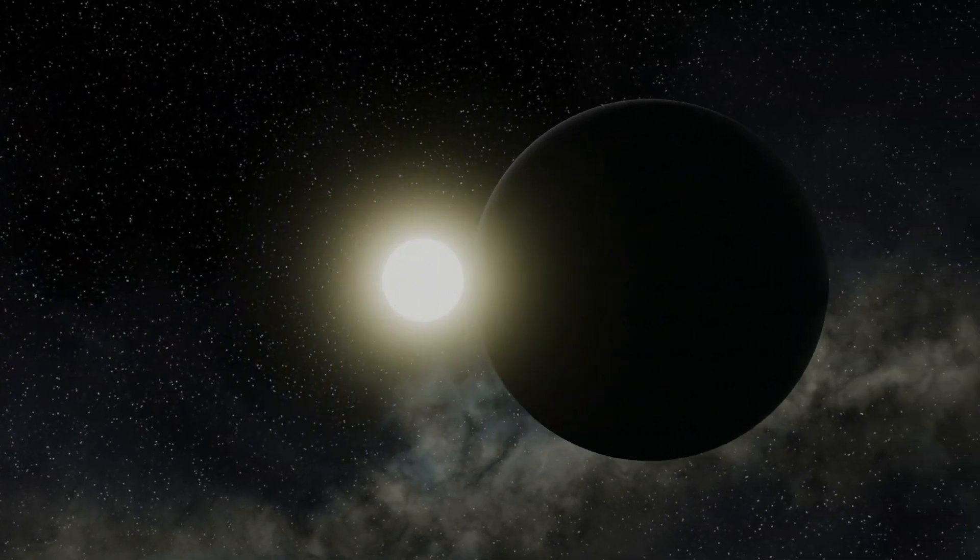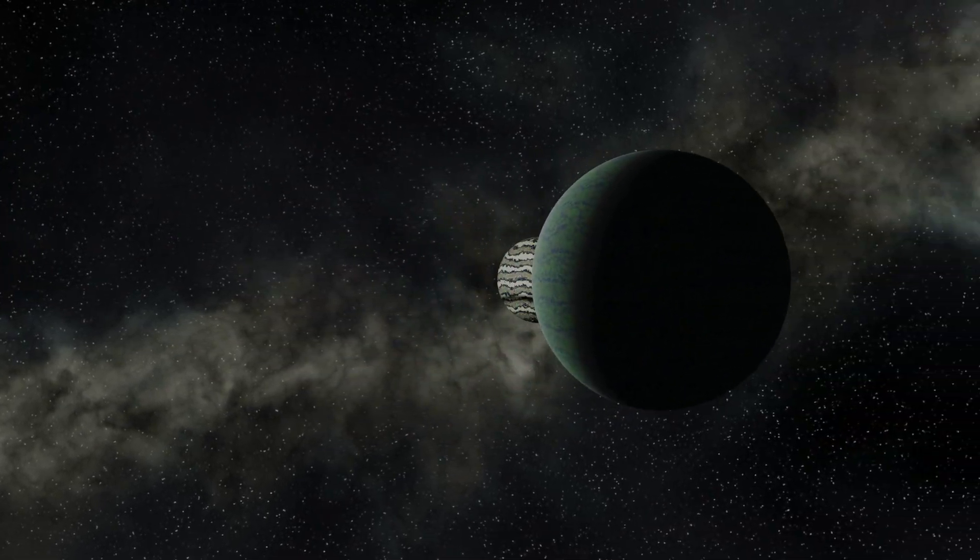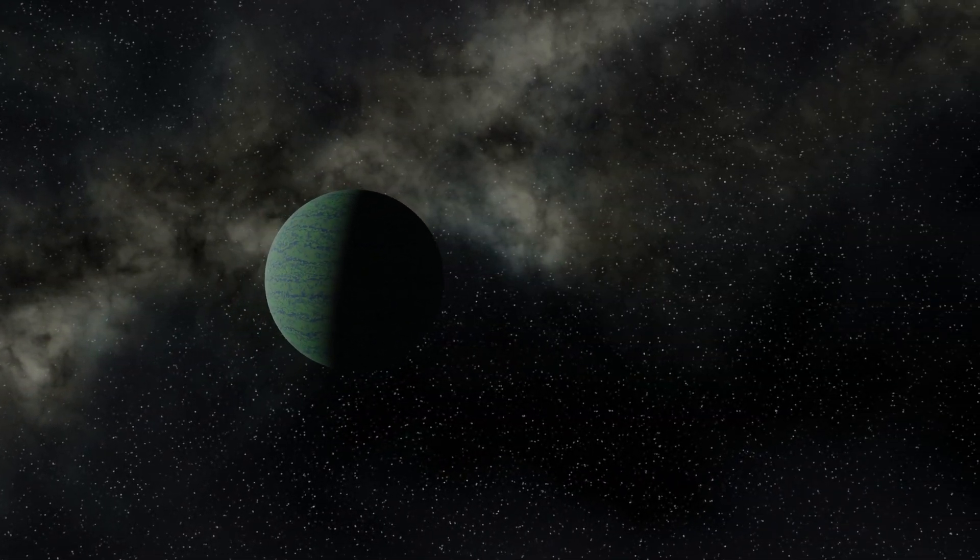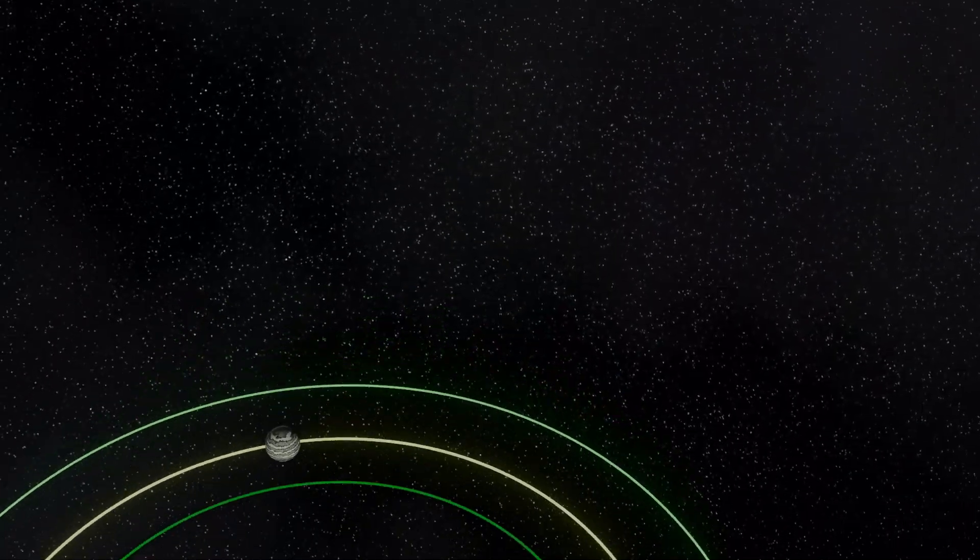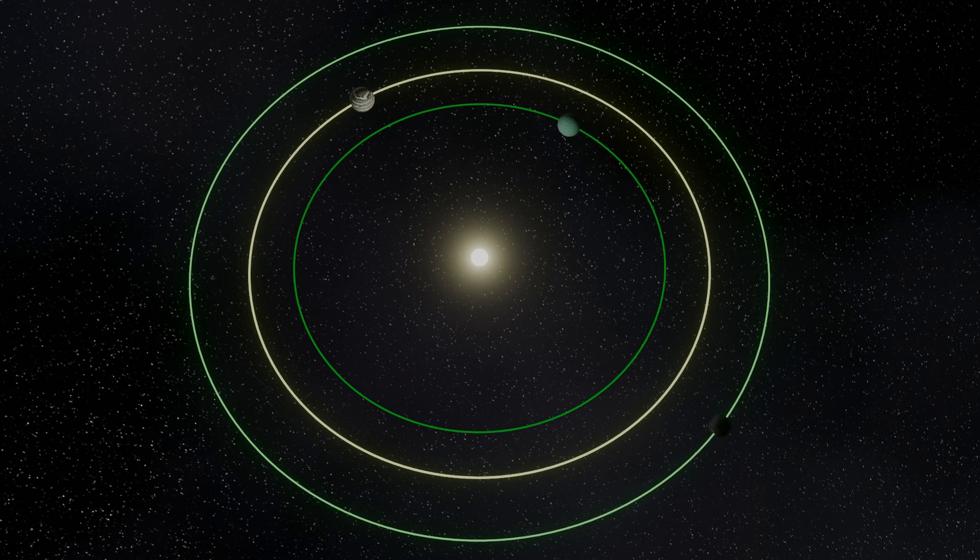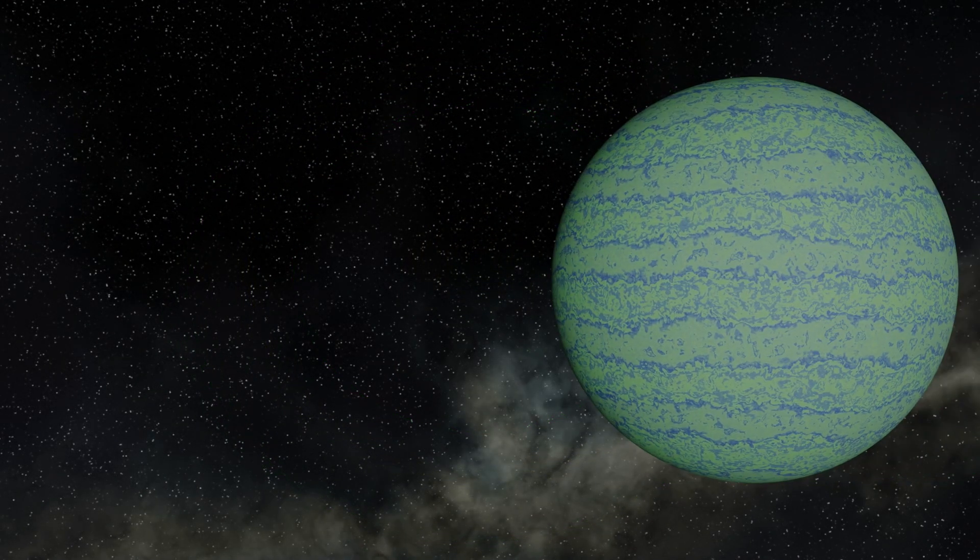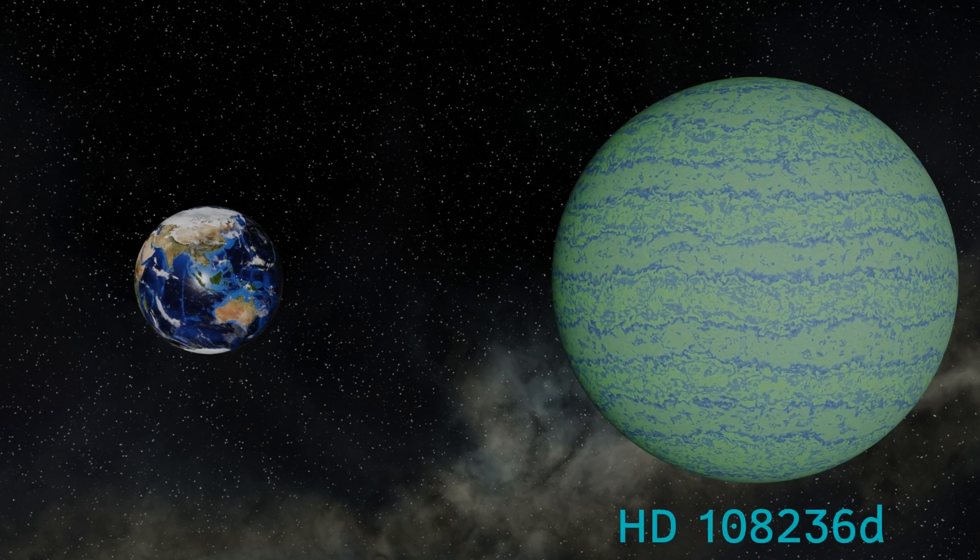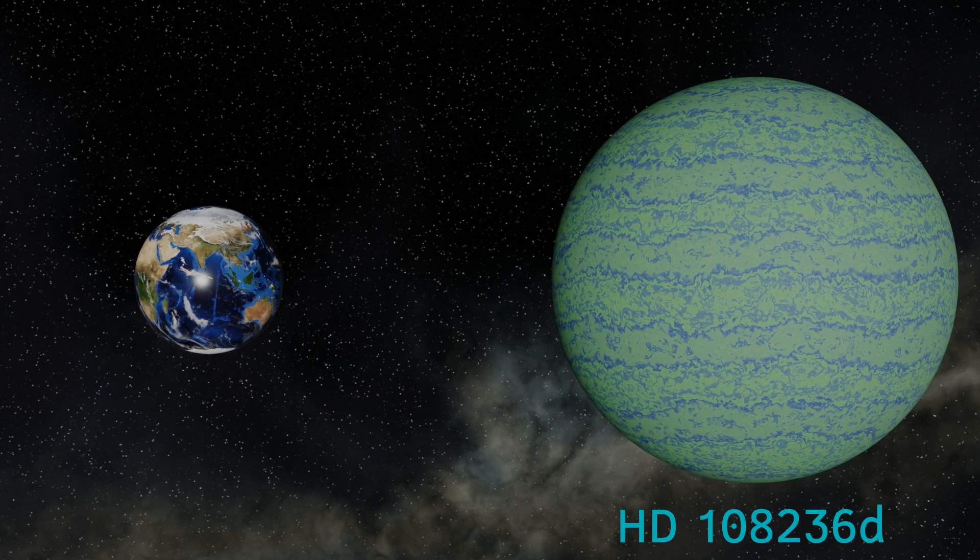HD108236d orbits its star in just 14 days and 4 hours. It's found orbiting at a distance from the star of nearly 17 million kilometres. Just putting that into context, that's just 11% of the distance of the Earth to the Sun. This is another sub-Neptune, it's 2.7 times the radius of the Earth, and has 7.8 times our planet's mass.